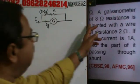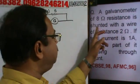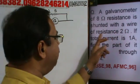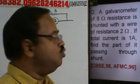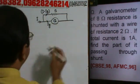Next problem: a galvanometer of 8 ohm resistance is shunted with a wire of resistance 2 ohm.